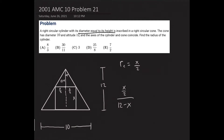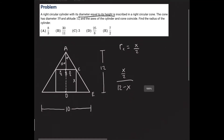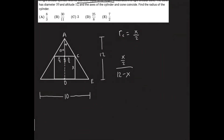I'm going to add some letters here. I'll call the vertices A, B, C for the small triangle, and D and E for the corresponding points at the base of the cone. Triangle ABC is similar to triangle ADE, where D is just segment AB extended out to the base of the cone.